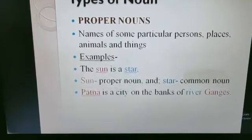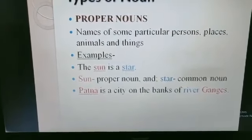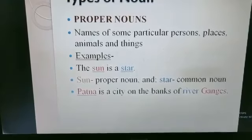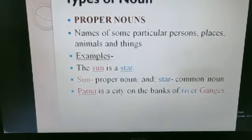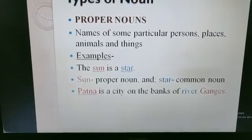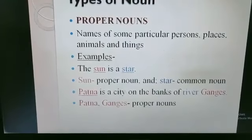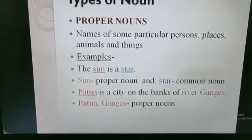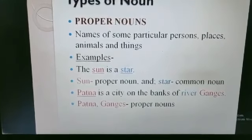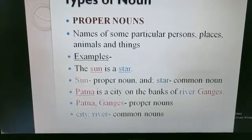For example, in this sentence — 'Patna is a city on the banks of river Ganges' — we are referring to a particular city, that is Patna, and a particular river, that is Ganges. So in this sentence, Patna and Ganges are proper nouns, and the words city and river are common nouns.